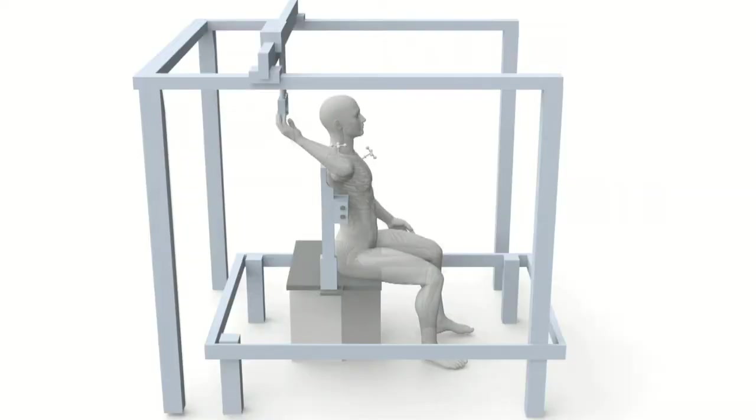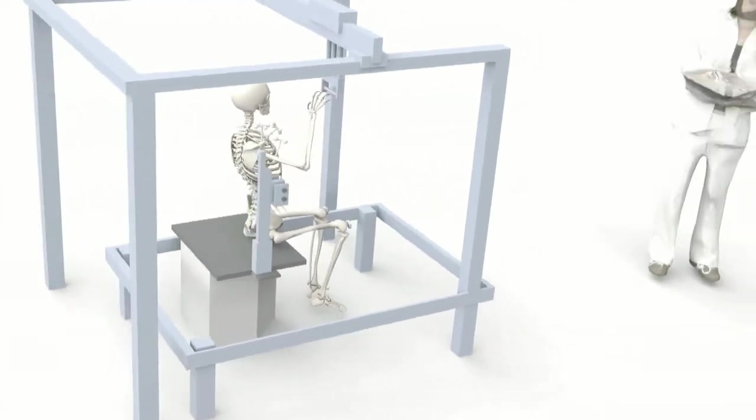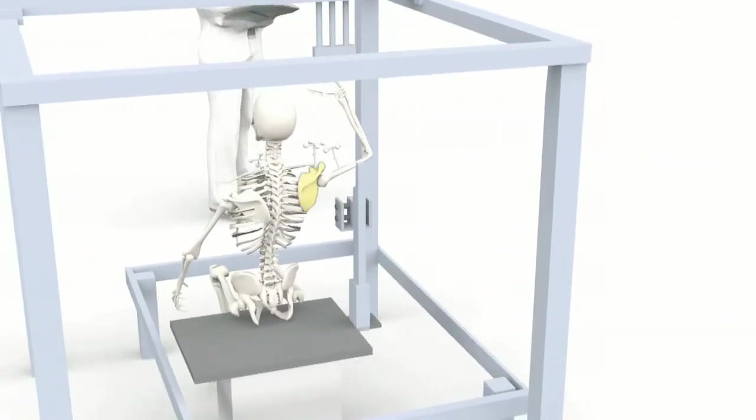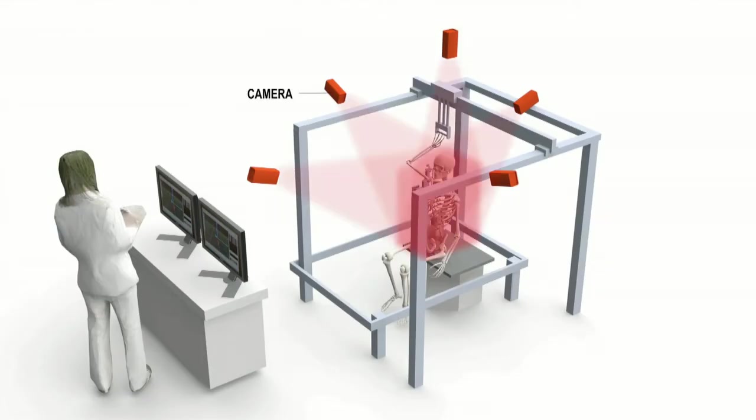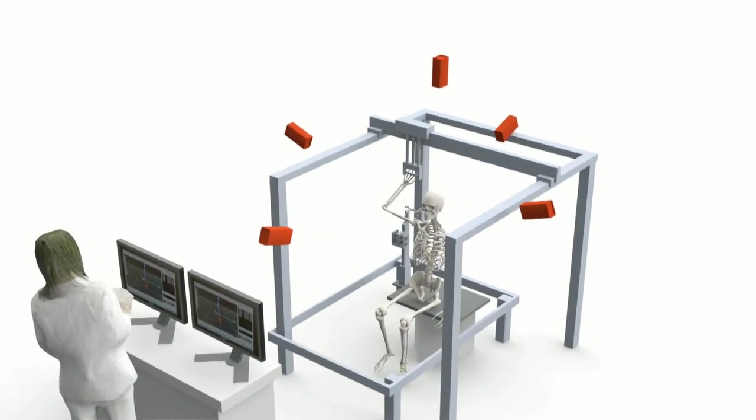To learn more about how to prevent or treat a misaligned scapula, researchers introduced the injury to cadavers and then studied its effect on the shoulder joint. The experiment uses cameras to track the position of markers attached to the parts where the injury was introduced.